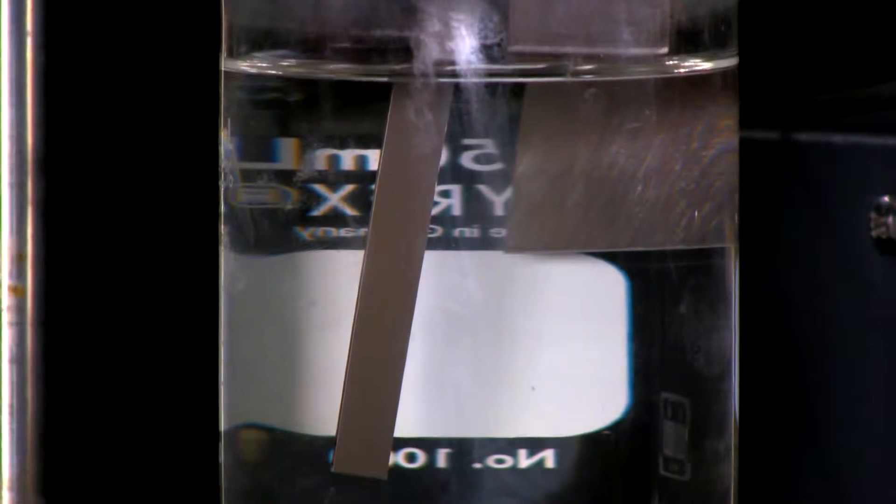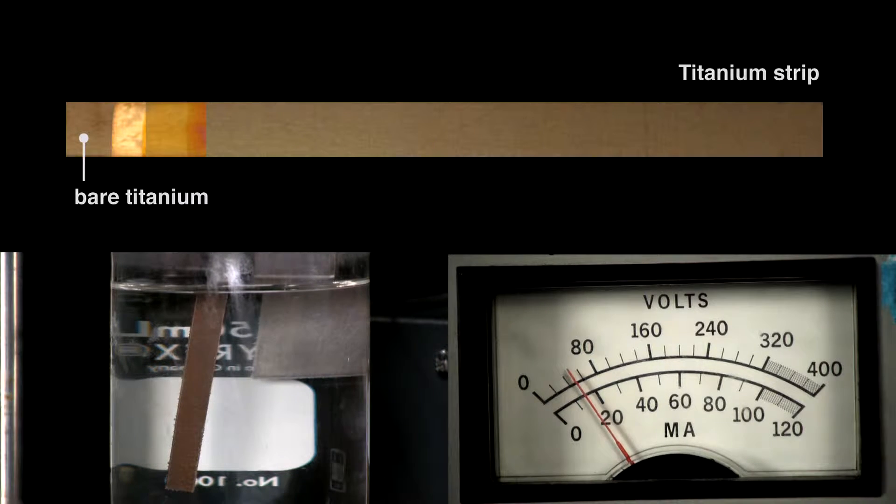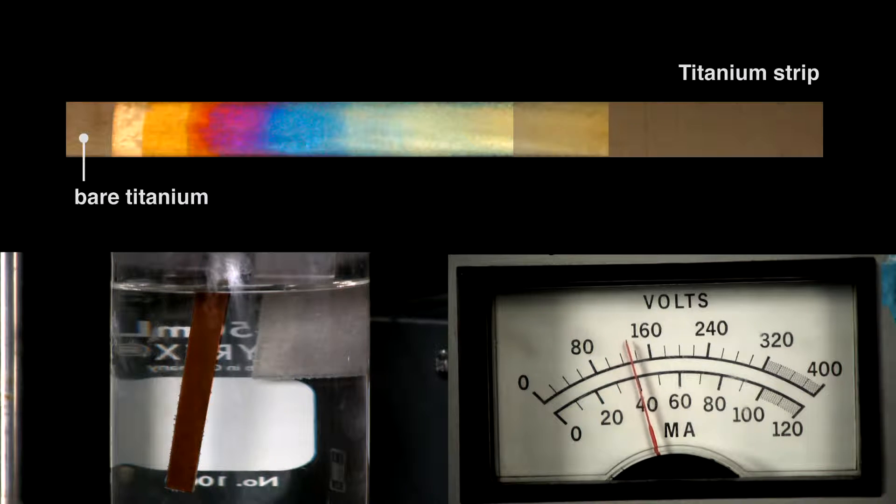We see bubbles coming off the electrodes. As I increase the voltage, the color of the titanium changes. We call this process anodizing. Here's what's happening. I'm growing a layer of titanium dioxide.